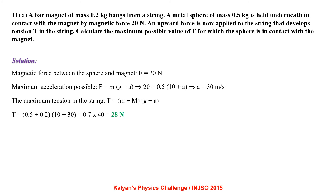A bar magnet of mass 0.2 kg hangs from a string, with a metal sphere of mass 0.5 kg held underneath by a magnetic force of 20 N. An upward force is applied developing tension T in the string. The maximum acceleration possible satisfies: 20 equals 0.5 times (10 plus a), giving a equals 30 m per second squared. Maximum tension T equals (0.5 plus 0.2) times (10 plus 30), which comes out to be 28 N.